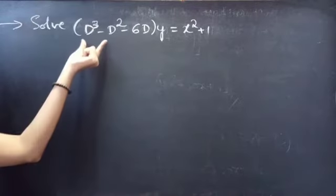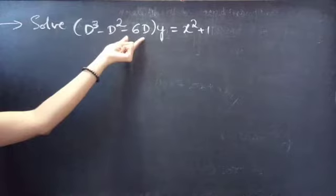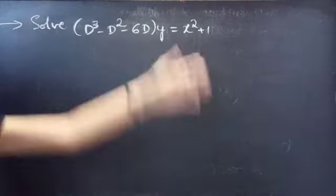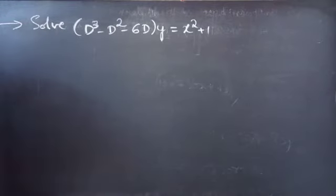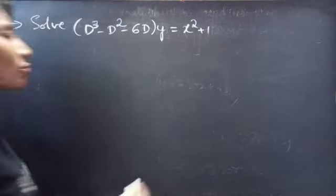Problem: Solve (D³ - D² - 6D)y = x² + 1.